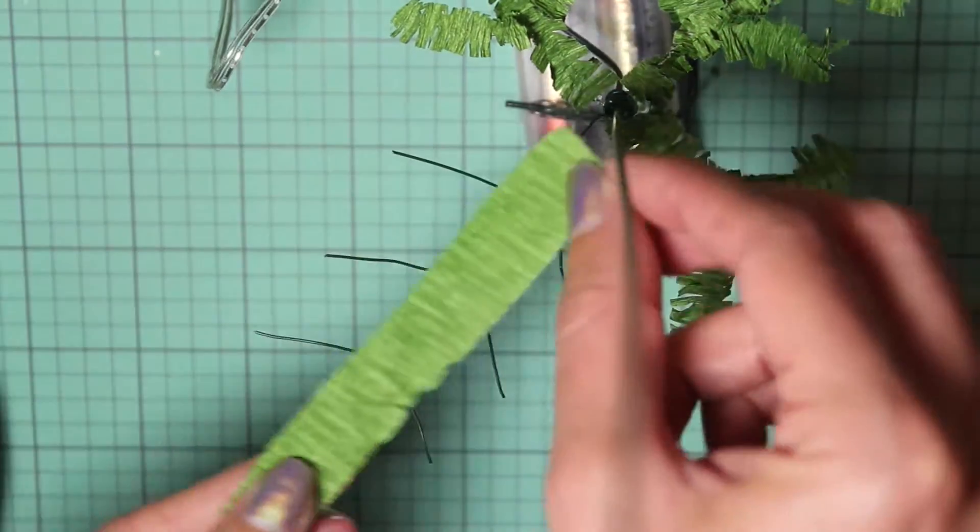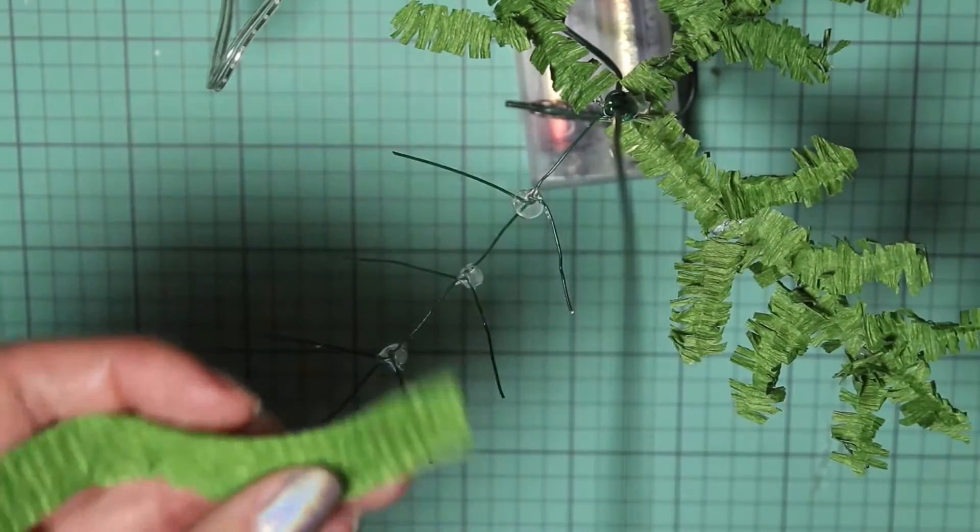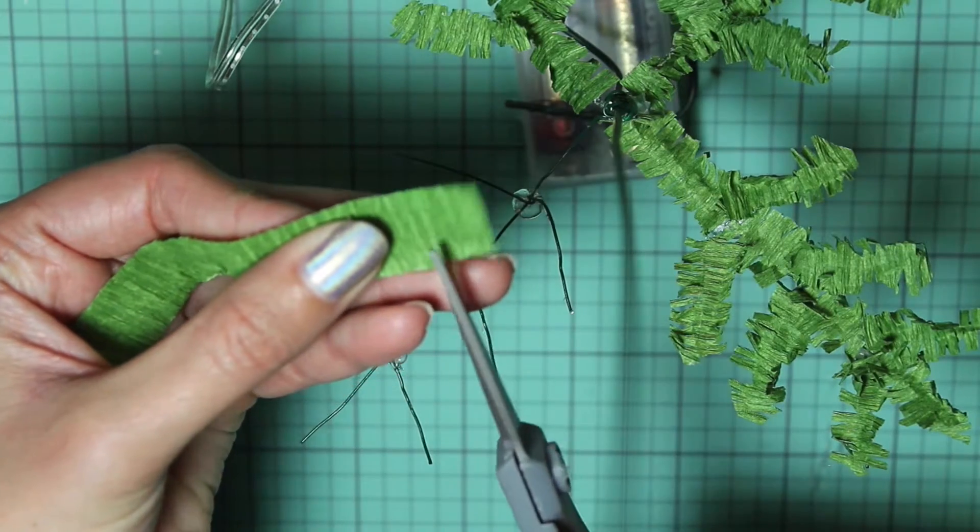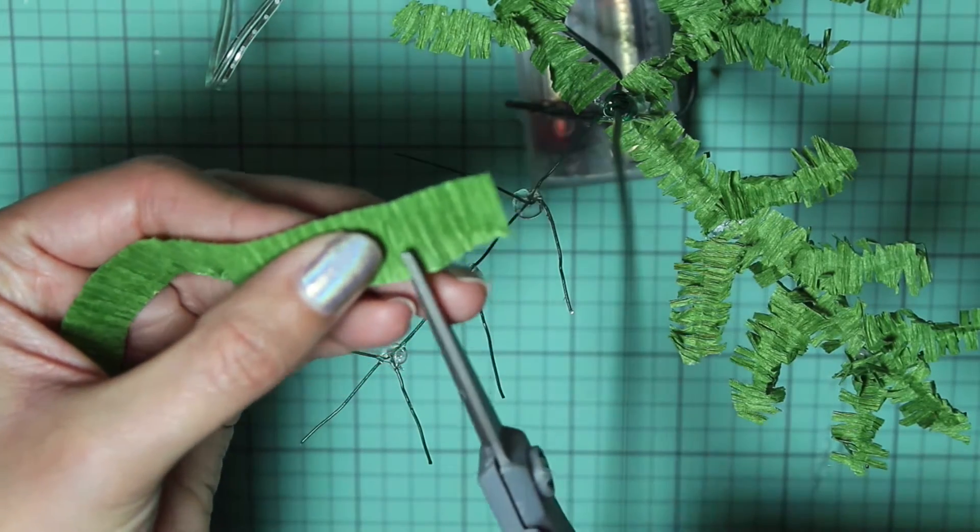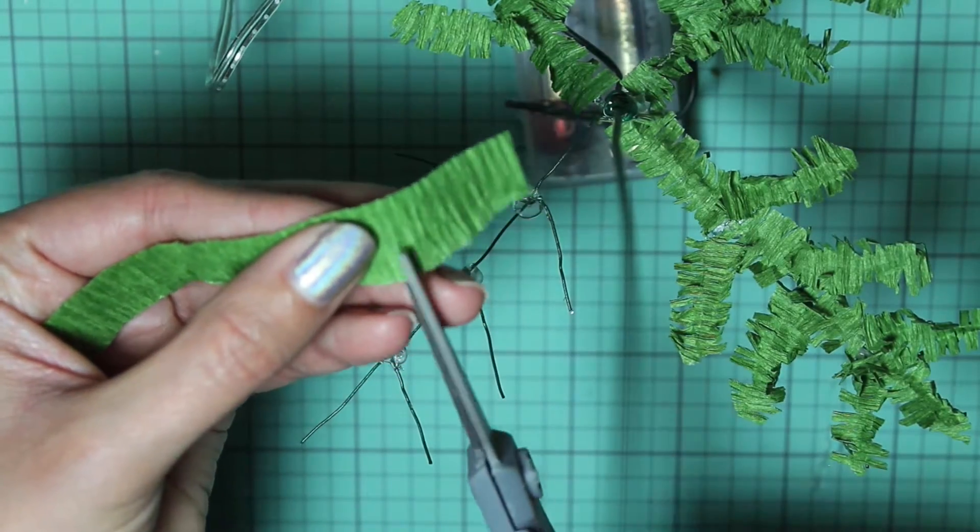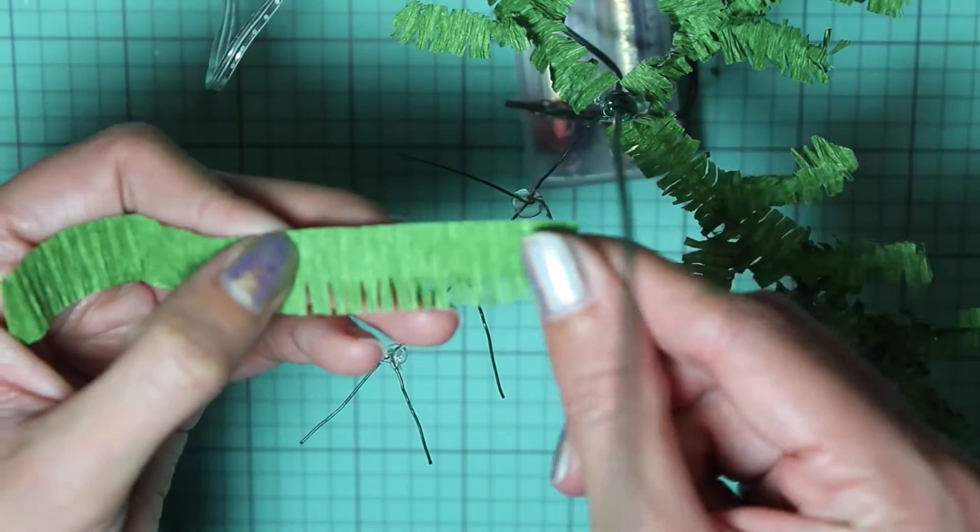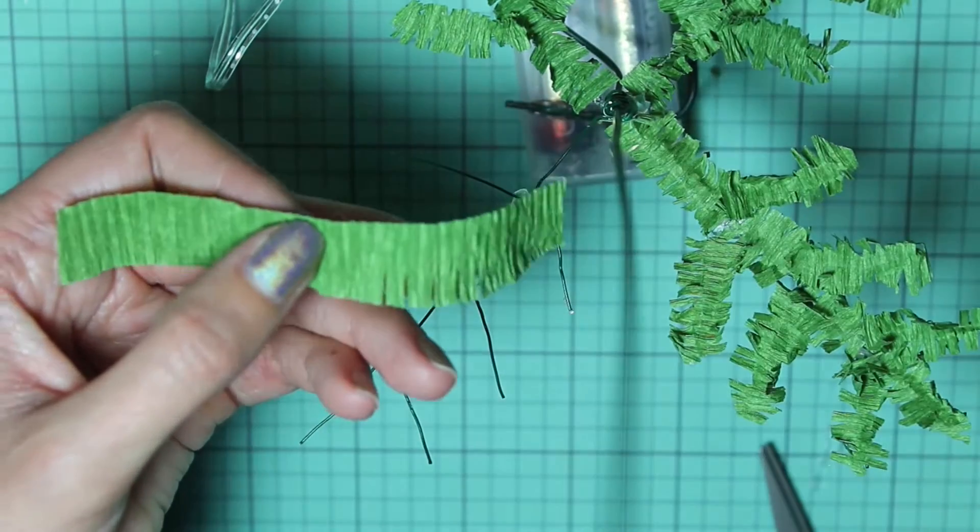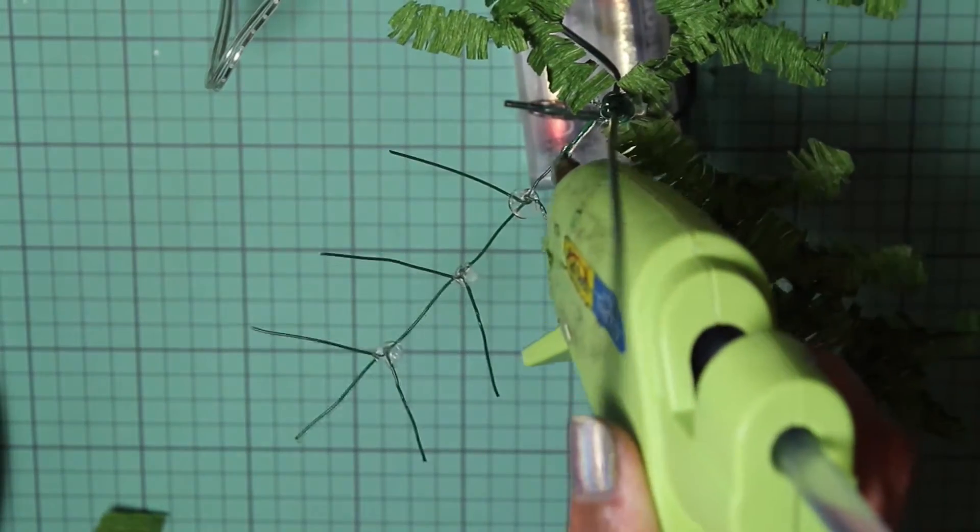Next, cut a strip of green crepe paper like this, and then take the scissors and cut fringe along both sides. You can stack multiple of these and cut the fringe all at once.